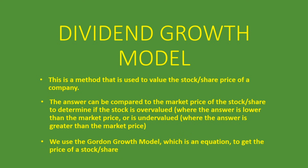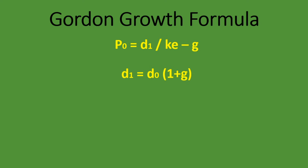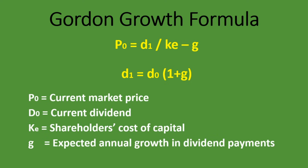We use the Gordon growth model equation to get the price of a stock or a share. The formula is: P0 equals D1 divided by KE minus G. P0 is the current market price of the share. D0 is the current dividend being provided to shareholders. KE is the shareholders' cost of capital. And G is the expected annual growth in dividend payments.